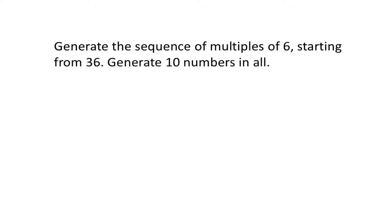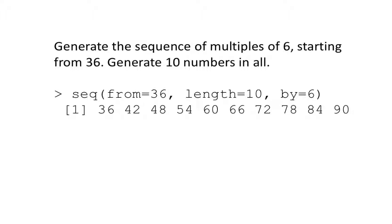Generate the sequence of multiples of 6 starting from 36. Generate 10 numbers in all. So your answer should be, meaning the result should be 36, 42, 48, et cetera. And you need 10 of these numbers. So obviously, this time, you're going to do from 36, by 6. You're not going to specify to. Instead, you're going to say length 10. So that gets the job done for us.